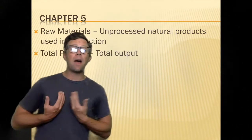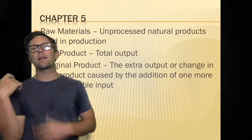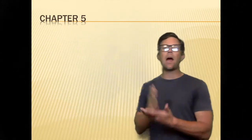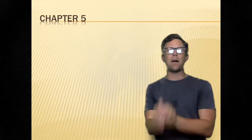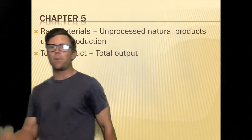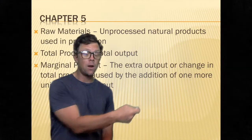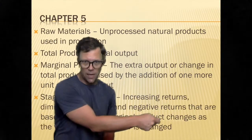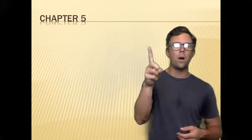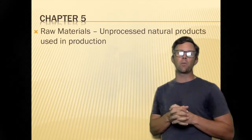Total product is an easy one — if I'm a company, how many things did I make? Whether goods or services, that day, that week, that month, that year — how much of that good or service did you make in your chosen time frame? That's total product, which means total output. Marginal always means one extra input or one extra output. So marginal product is the extra output or change in total product caused by one additional variable unit — another employee, another factory, or another hour of business.